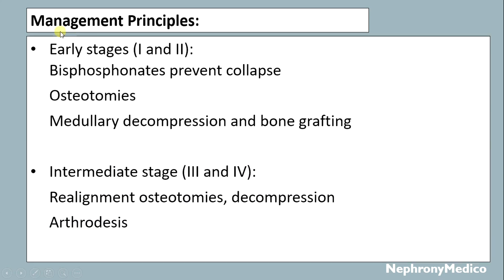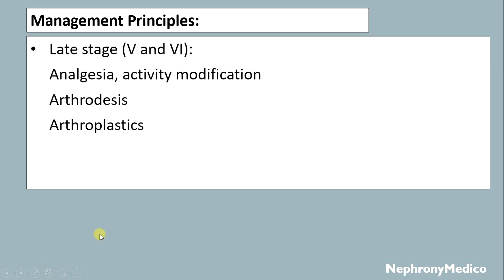Management principles: In early stages 1 and 2, bisphosphonates should be given to prevent collapse; osteotomy and medullary decompression and bone grafting can be done. In intermediate stages 3 and 4, realignment osteotomy, decompression, and arthrodesis can be done. In late stages 5 and 6, analgesia, activity modification, arthrodesis, and arthroplasty can be done.